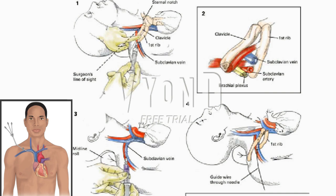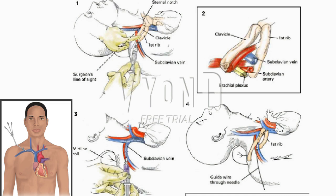After instillation of local anesthetic to include the periosteum of the clavicle, the subclavian vein is cannulated with a small-caliber needle (Figure 3). Ultrasound guidance may be used to provide assistance. A key landmark is the point one finger-breadth lateral to the junction of the middle and medial thirds of the clavicle. The needle is inserted at this point and passed along a straight line toward the sternoclavicular joint on a plane parallel to the chest wall.